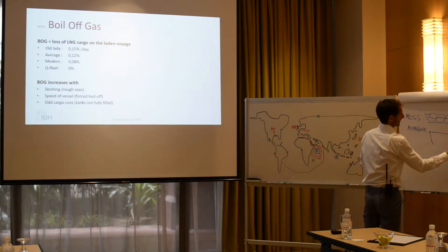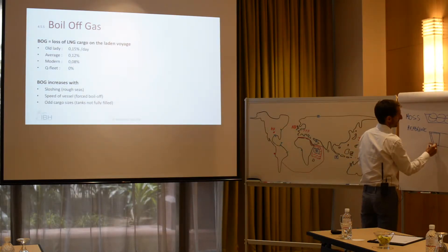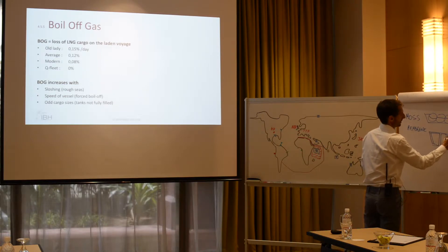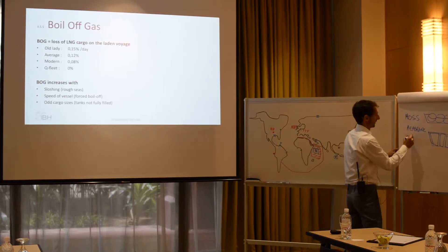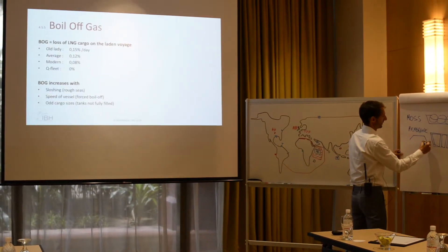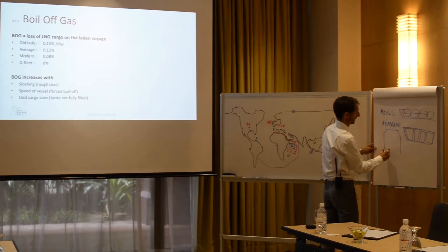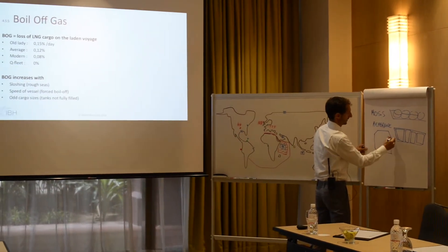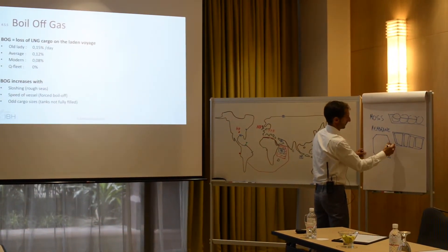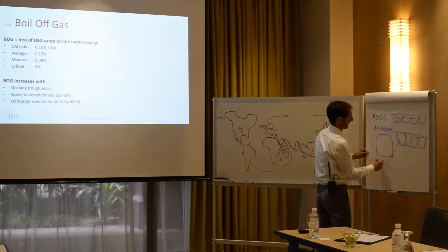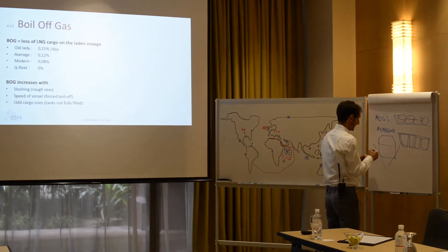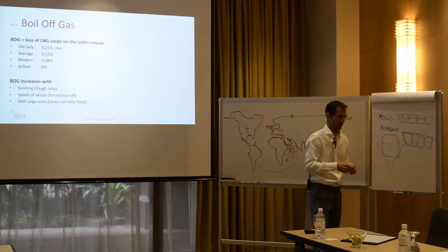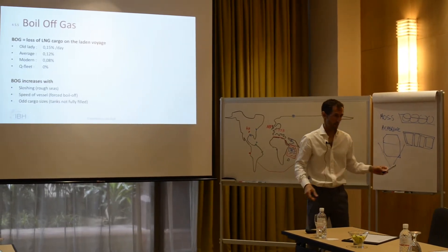With a Membrane vessel, you carve the tanks inside the hull. So a Membrane, if you look at this cross section, would be shaped to fit the ship's hull. Then you can imagine that the sloshing in that case is much worse.